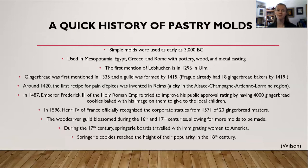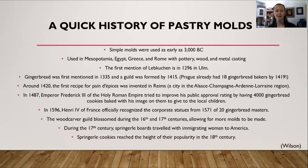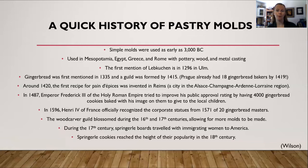Around 1420, the first recipe for pain de paix — please correct me on that pronunciation — was invented in Reims, a city in the Alsace-Champagne-Lorraine region. In 1487, Emperor Frederick III of the Holy Roman Empire tried to improve his public approval rating by having 4,000 gingerbread cookies baked with his image on them and giving them to local children. You will find that with pastry molds through history, royalty loved using this as a propaganda piece.